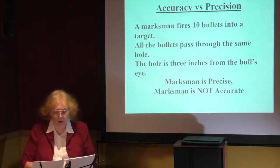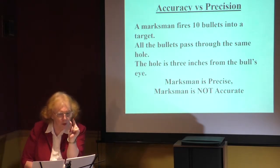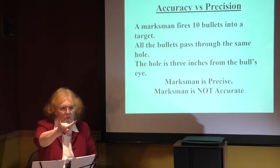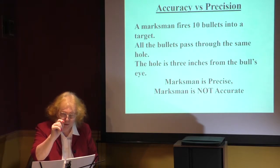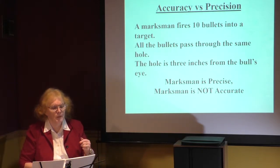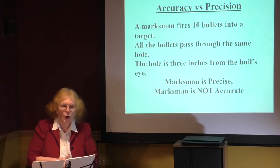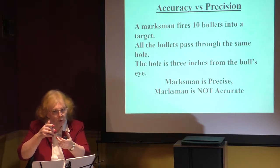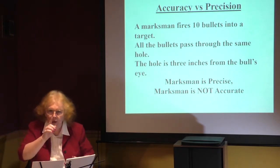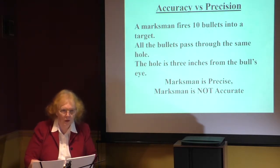Here's a description of accuracy versus precision: a marksman fires ten bullets into a target. All ten bullets pass through the same hole, but the hole is three inches from the bullseye. We've been very, very precise, but we're inaccurate. In terms of scientific instruments, we actually prefer to build an instrument which is precise and not necessarily accurate. Because, like with the rifle, if it's precise, I can calibrate it — adjust the telescope — and make sure I'm always hitting the target the same way. So we emphasize precision even though we talk about accuracy.